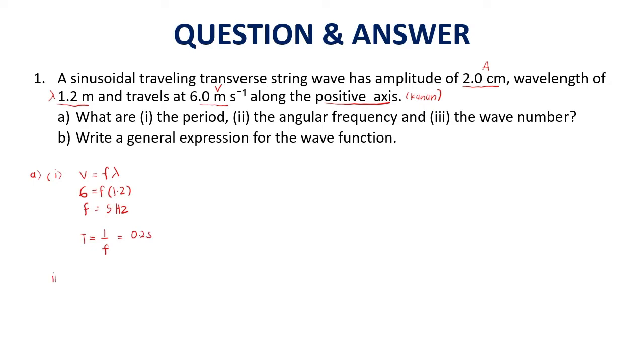Question number 2, what is angular frequency omega? You have 2 options, either you use 2πf or 2π over T. I'll use 2π times f, which is 5, so you get 10π radians per second. And the third one is wave number K equals 2π per lambda. What is wave number? How many waves per meter. 2π divided by lambda 1.2, then you get 1.67π per meter.